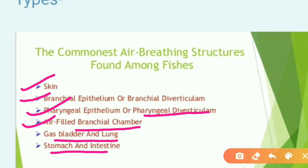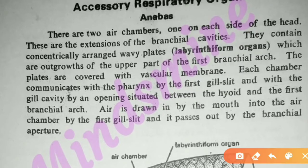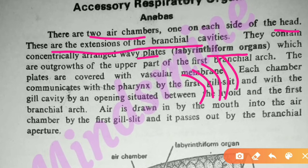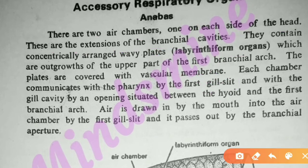After covering the types, we will now focus on the three fishes. Starting with Anabas: two air chambers are present on both sides of the head. These are extensions of the branchial cavities. They contain concentrically arranged wavy plates which are outgrowths of the upper part of the first branchial arch.